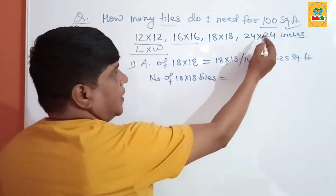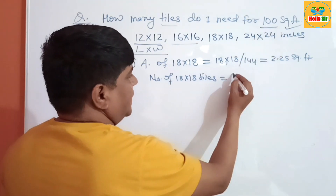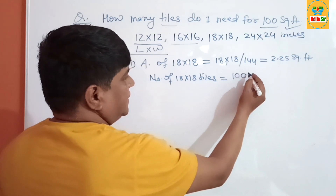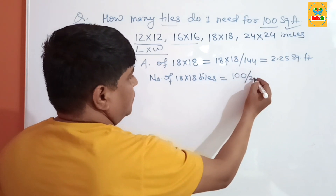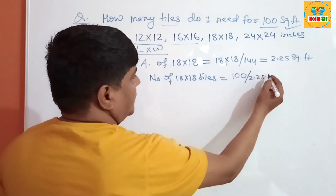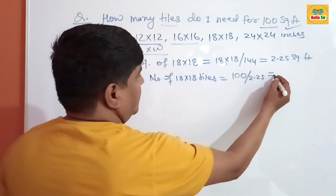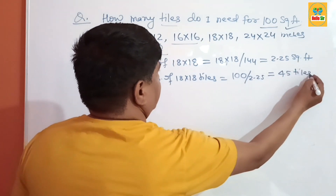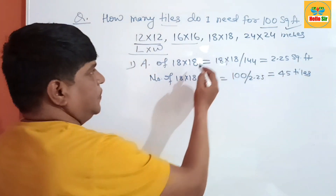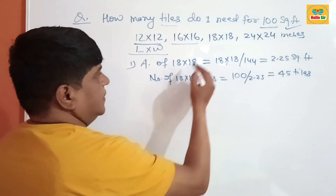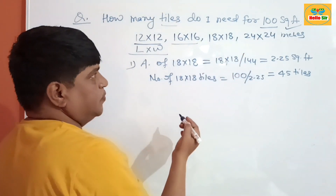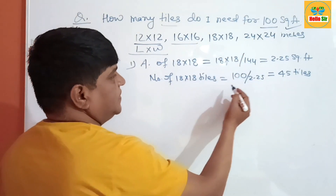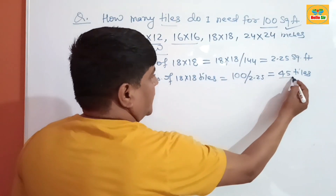To cover a 100 square foot area, your given area is 100 square feet. Divide by 2.25, and this gives 45 tiles. If you select 18 by 18 inch tiles for your project, then you will need 45 tiles.